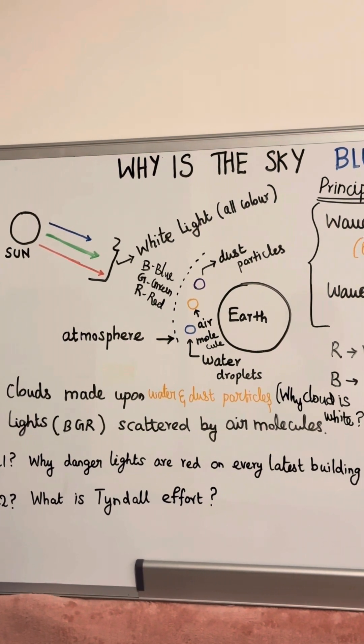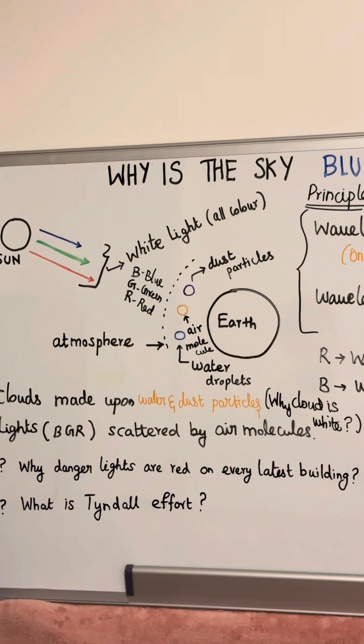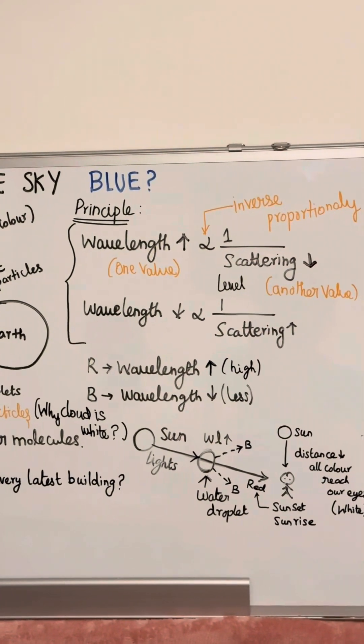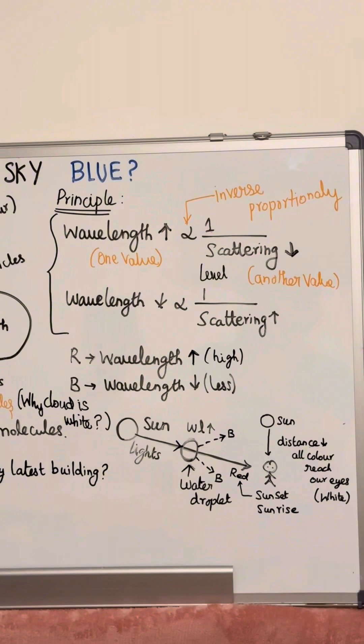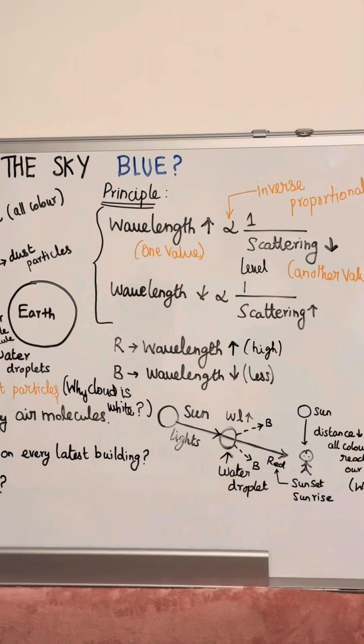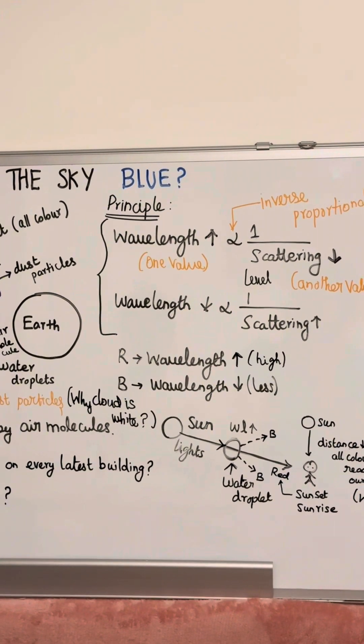Atmosphere is made upon air molecules which scatter the light based on the wavelength. Here is the principle: largest wavelength scattered the least. So wavelength is inversely proportional to scattering level. Inversely proportional occurs when one value increases and the other value decreases.